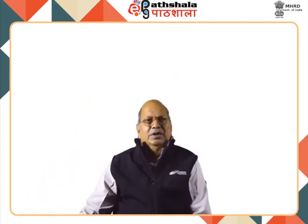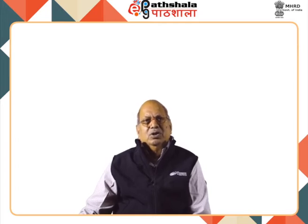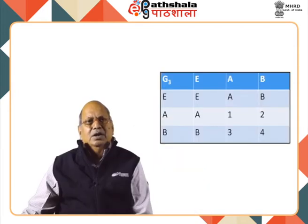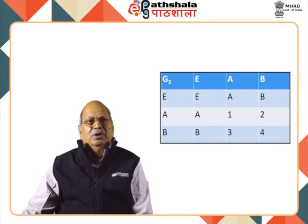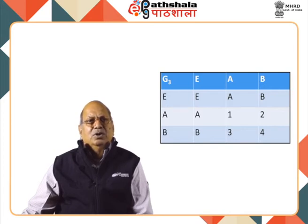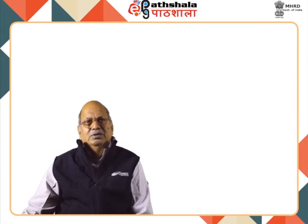Now let us take another group, G3. Here the order of the group is 3 and elements are E, A, and B. The format of the group multiplication table has the first row E, A, B and column E, A, B. We have to fill up entries 1, 2, 3, and 4, generated by taking the various products.